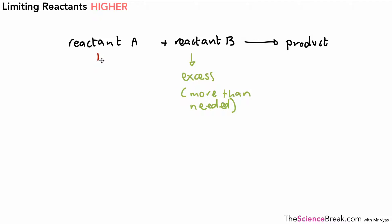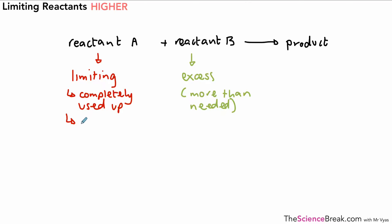In terms of reactant A, we have a different way of describing that. We call that reactant limiting, and the reason we call it limiting is because that reactant is completely used up during the chemical reaction. We can also say that it limits the amount of product that is formed, because once reactant A has run out, no more product is going to be formed, even though there is an excess of reactant B.